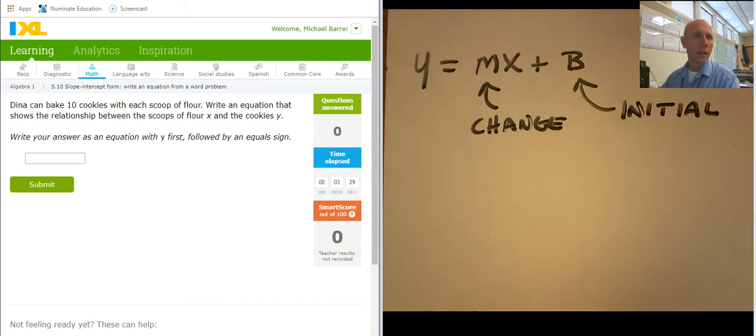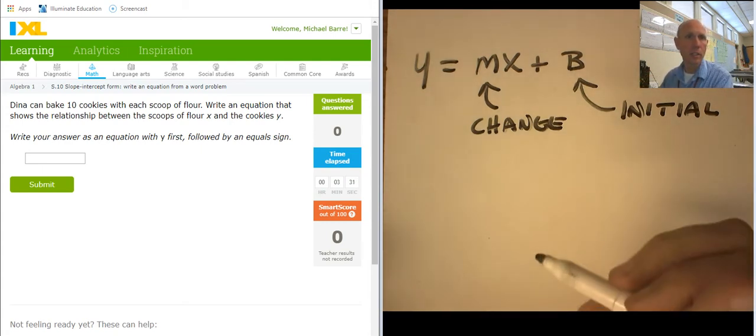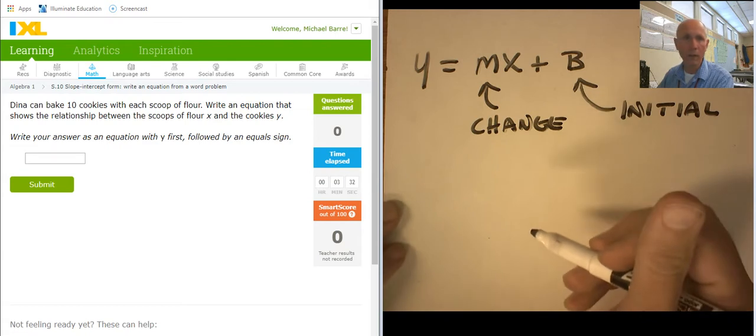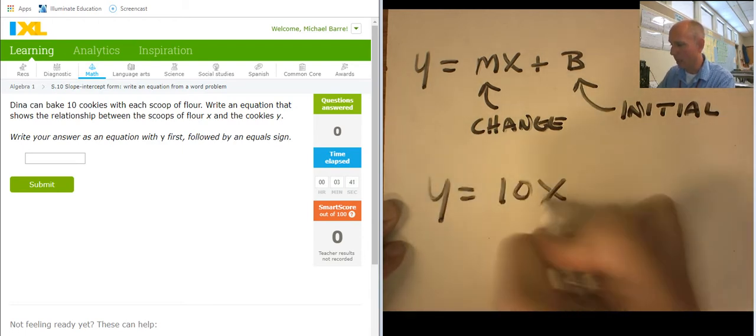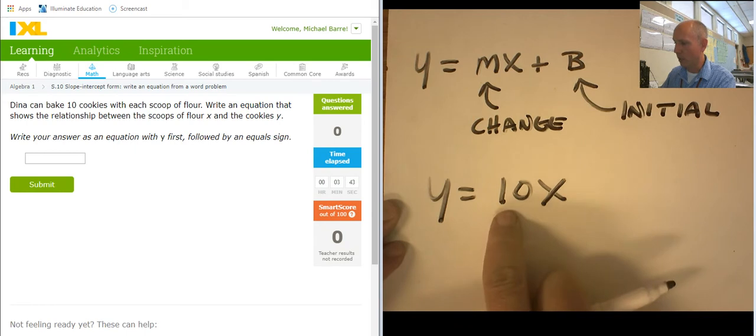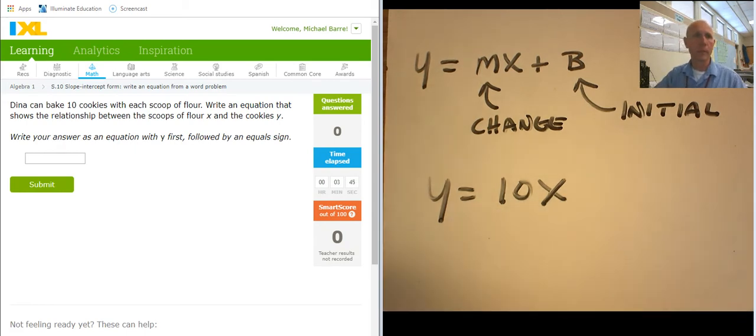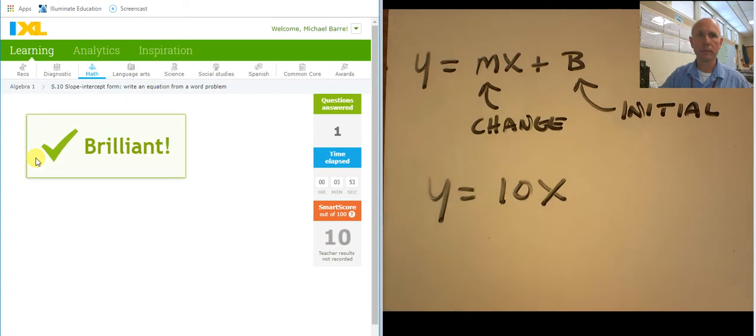So, Diana can make 10 cookies with each scoop of flour. Write an equation that shows the relationship between the scoops of flour x and the cookies y. So y equals 10x. One scoop, 10 cookies. Two scoops, 20 cookies. Let's get that in there. y equals 10x. Brilliant.